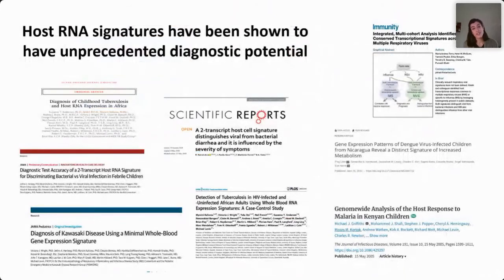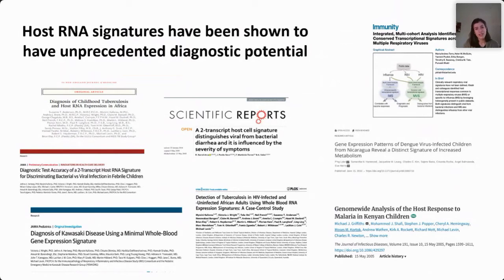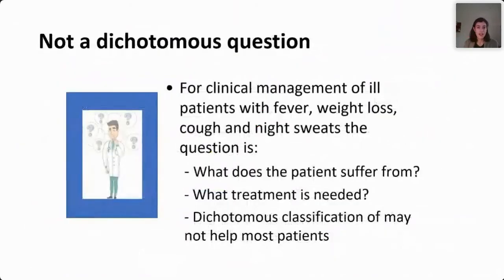These are just two examples of how gene expression measured in the blood can identify disease groups. It's been shown recently that host RNA signatures have unprecedented diagnostic potential, with many publications for different diseases including dengue, malaria, TB, and Kawasaki disease. In the last few minutes I'll tell you what we're trying to do now and where the gene expression diagnostics field is heading.